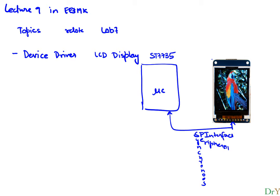In a nutshell, this protocol will require us to adhere to a specific way of talking to this device. There are other names for this protocol — there is I2C and SSI. These are all different variations of the same protocol, which uses serial communication where we're going to use a single pin to communicate.